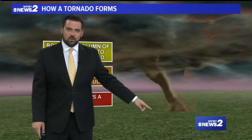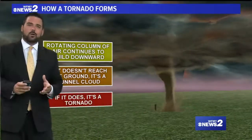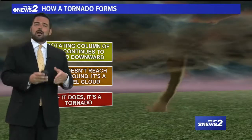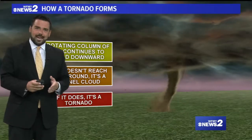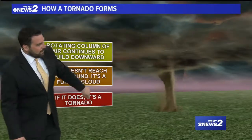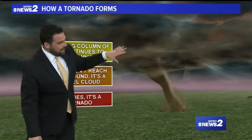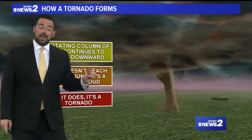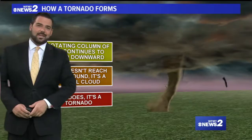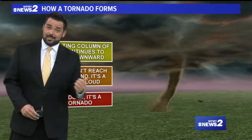It's not officially a tornado until it hits the ground — it's a funnel cloud first. But it's that rotating air that gets tilted and comes down, and that's when it can be dangerous. If you see a cloud like that in the sky, you've got to take shelter.